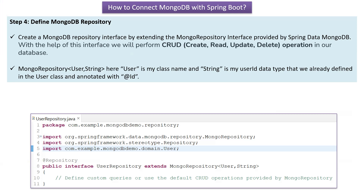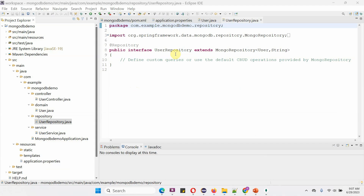Step 4 is to define the MongoDB repository. We create a MongoDB repository interface by extending the MongoRepository interface, which is provided by Spring Data MongoDB. With this interface we can perform CRUD operations on our database. Here you can see the UserRepository interface which extends MongoRepository, with the domain class User and String as the ID type — String because userId is auto-generated. We can also define custom queries or use the default CRUD operations provided by MongoRepository.